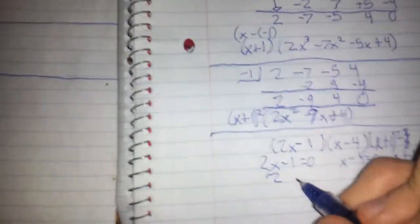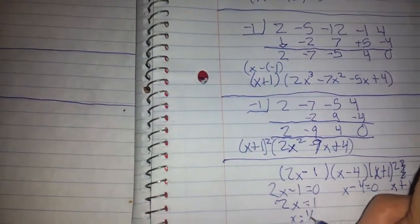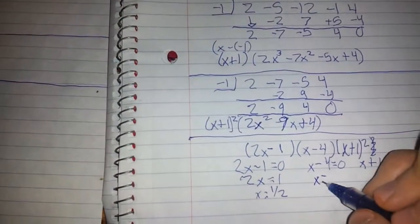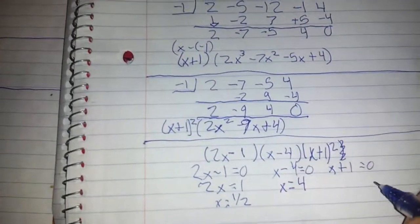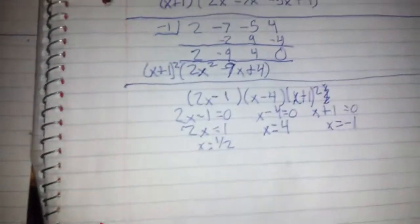So this is going to be 2x equals 1, x equals 1/2. And that's our first zero. This is going to be x equals 4 for a second zero. And this is going to be x equals negative 1 for our third and final zero.